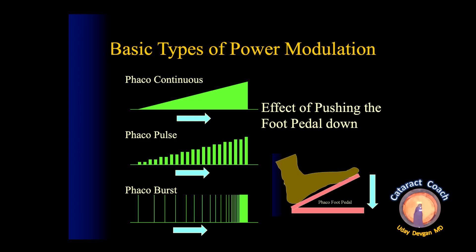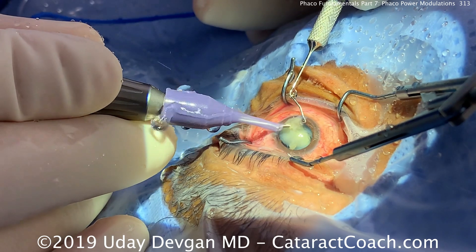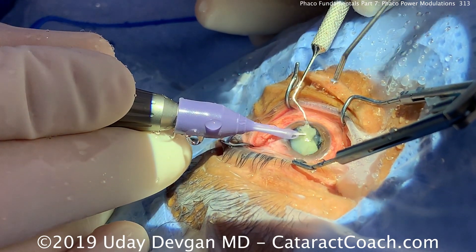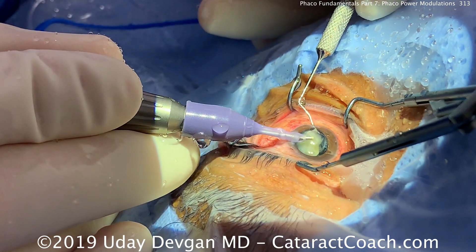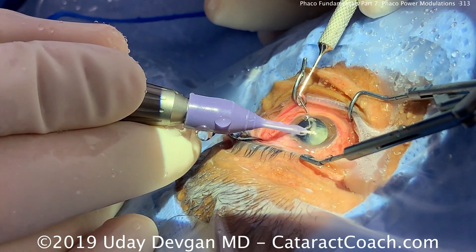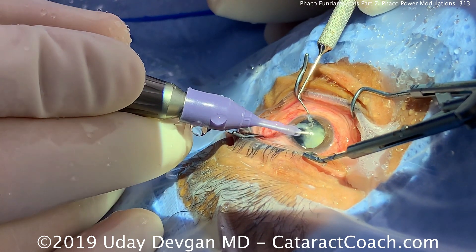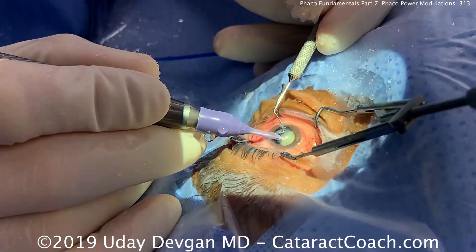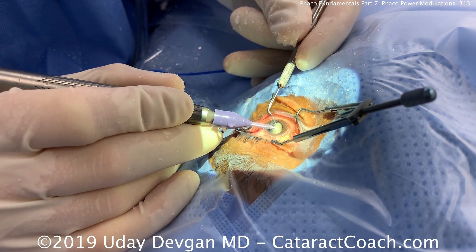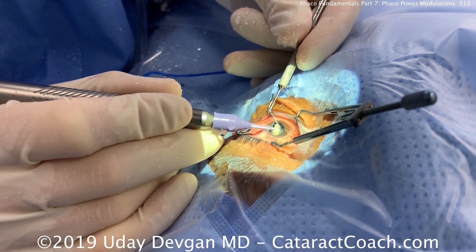The three basic types of modulation are continuous power, pulse power, and burst power. On a graph showing the effect of pressing the phaco foot pedal into position three, you can see how pulse and burst modes allow less energy into the eye and allow more cooling of the tip. In a live phaco case, the phaco tip is occluded with lens material, ultrasound energy is applied, and the pieces are broken down and emulsified — even dense cataracts can be safely emulsified.